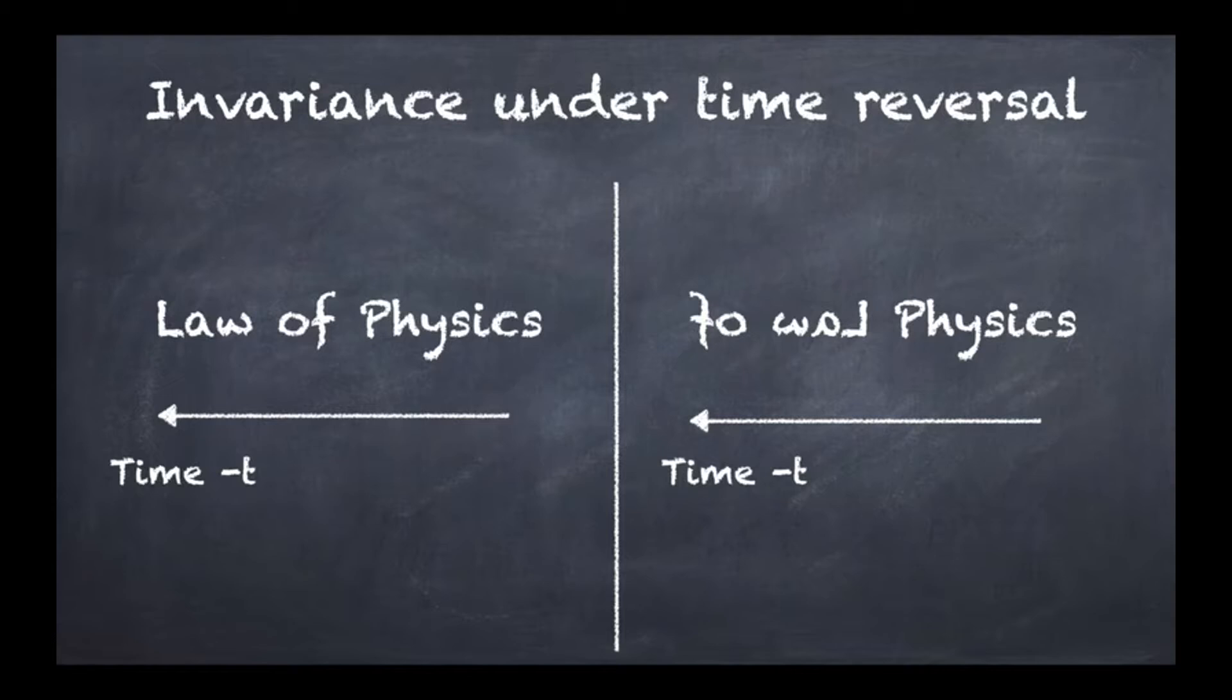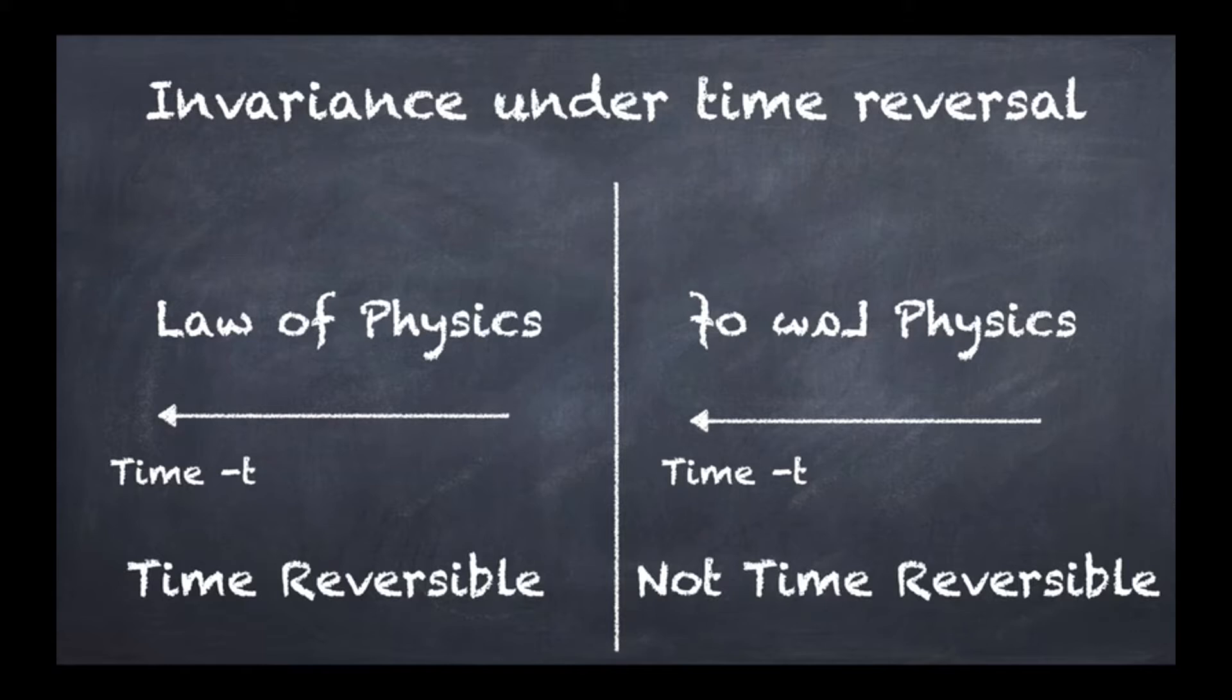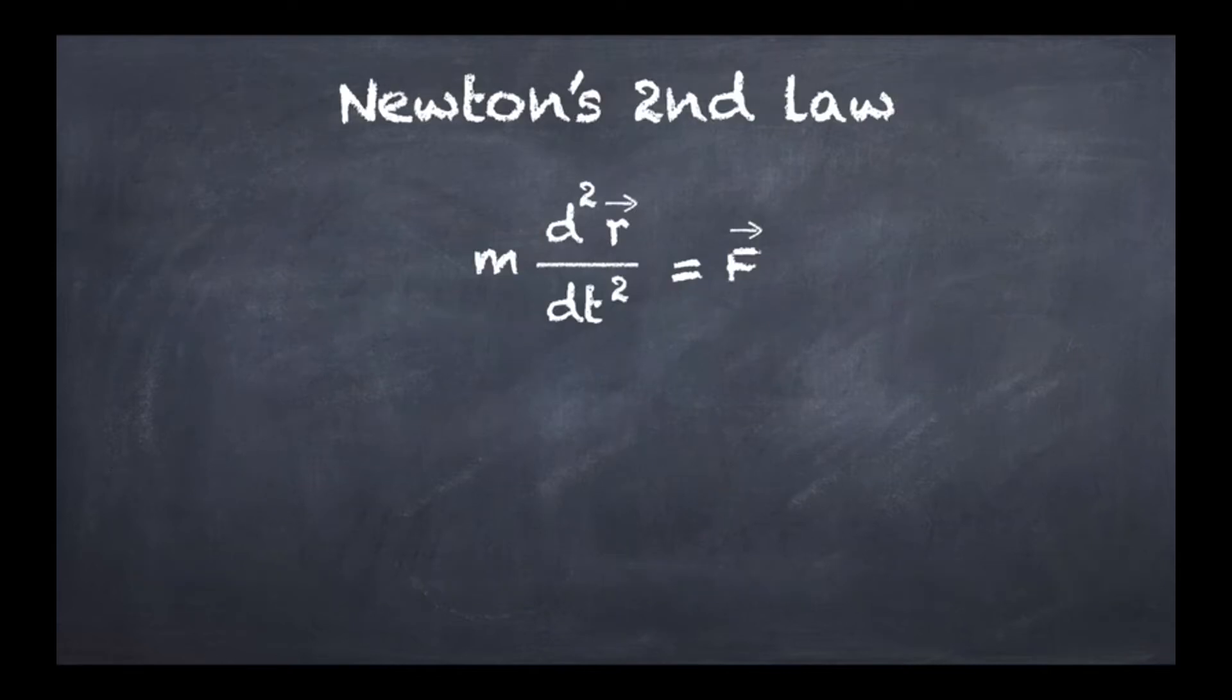On one hand, if the law of physics is still the very same that you started with, then it's said to be time reversible. If on the other hand this is not the same as what you started with, then it's called not time reversible. That's basically how this works, and what I want to evaluate in this video is how Newton's second law fares against this time reversal transformation.